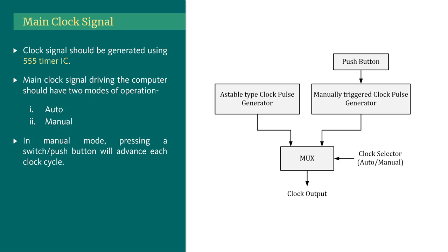In automatic mode, the clock pulse will be generating on its own continuously without any manual interaction. The positive edges will trigger the modules. In manual mode, there should be a push button connected with the manual circuitry, and whenever we push the button, our device will advance one clock cycle. Until we push the button again, it will do nothing.